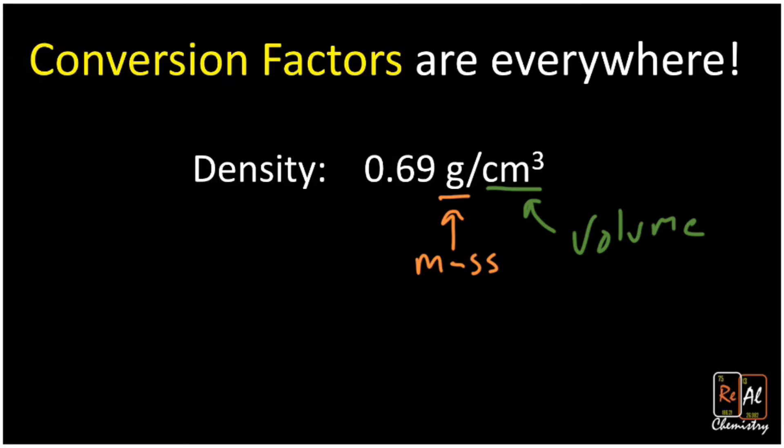And what this density can actually do is it can go back and forth between grams and cubic centimeters. So you could go and find the equation for density, density equals mass over volume, and you could use some algebra and get some answer. But actually, you don't need to do that. You can just remember that density is a conversion factor. And what does it convert between? The mass unit and the volume unit. So this will go between grams and cubic centimeters.